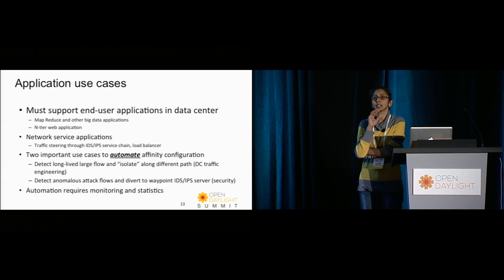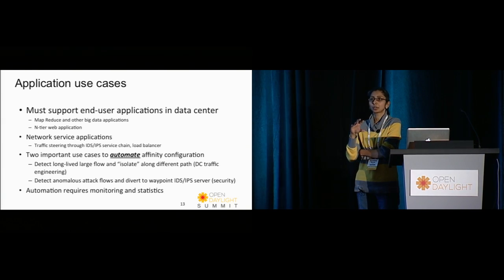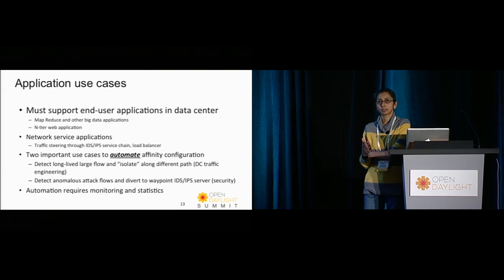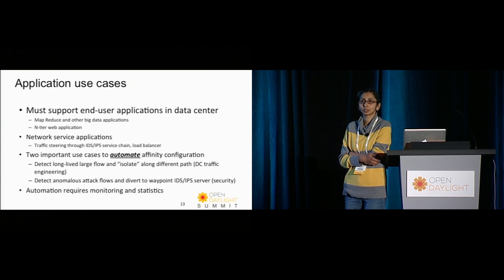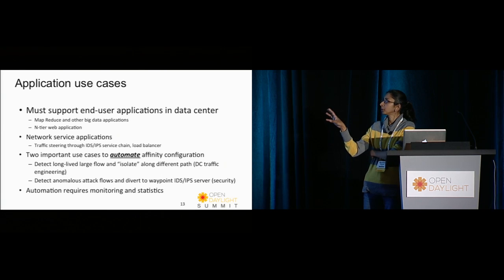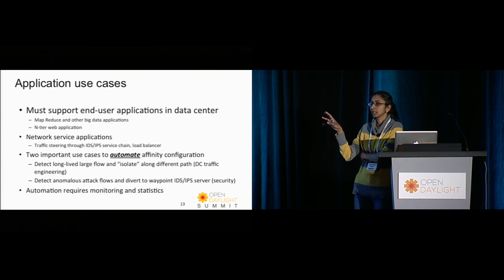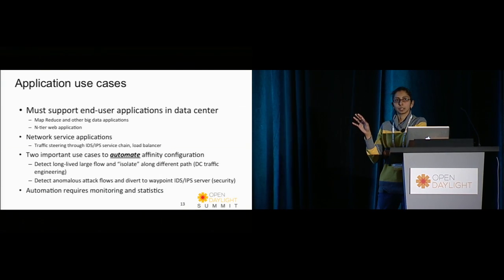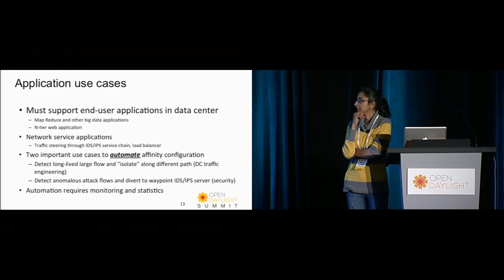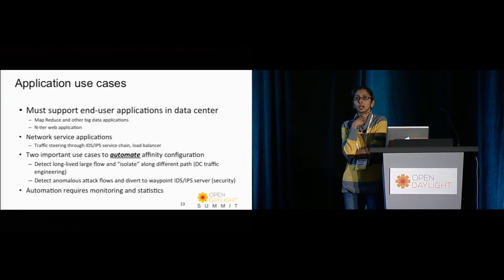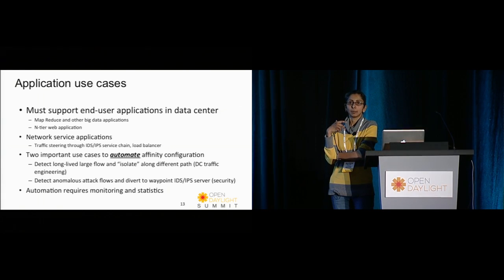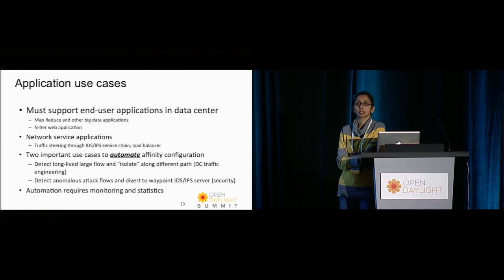Elephant flow detection is a separate problem and in some sense a prerequisite for automated affinity use. Mining network data for elephant flows might happen outside the controller, but the controller is a good place to gain visibility into the data. We don't view that as part of the Affinity API itself — though there's an interesting use case around querying the controller for elephant flows, high data rate flows, and long-lived large flows. How that would be presented as an API isn't yet clear to us.